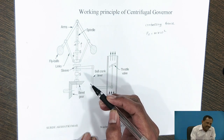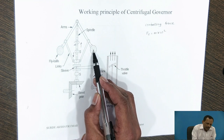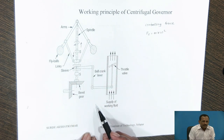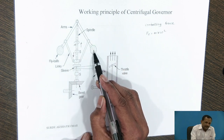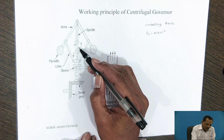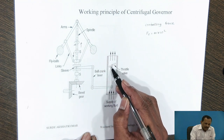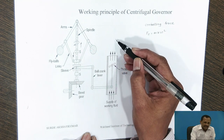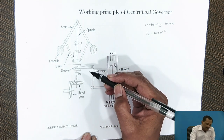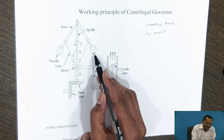Similarly, when the load on the engine increases, the speed of the engine and governor decreases. At that time, the centrifugal force acting on the ball also decreases, which results in the inward movement of the arm. This causes the sleeve to move in the downward direction. As a result, the throttle valve connected to the other end of the bell crank lever gets opened up and the supply of working fluid to the engine increases. Hence, the centrifugal governor works on the principle of centrifugal forces acting on the fly balls.